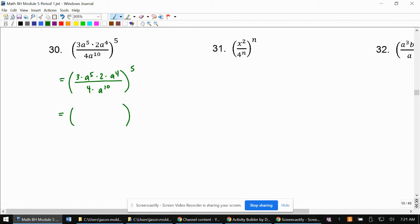All right. So first off, in the numerator, I'm going to start by multiplying 3 times 2, which is 6. I'm also going to multiply a to the fifth times a to the fourth, which is a to the 5 plus 4 is 9.